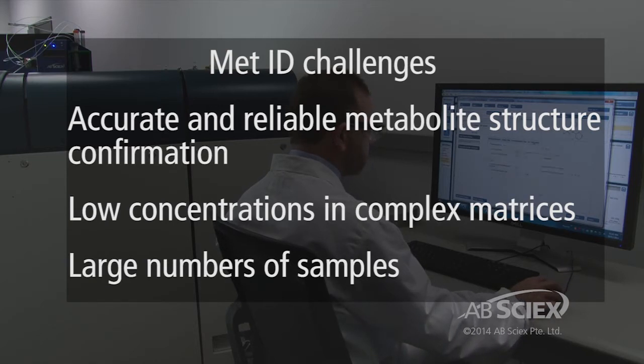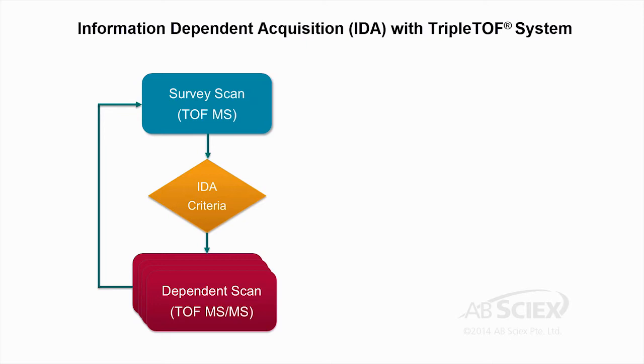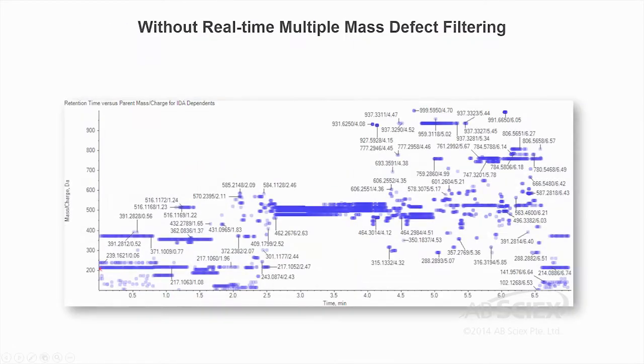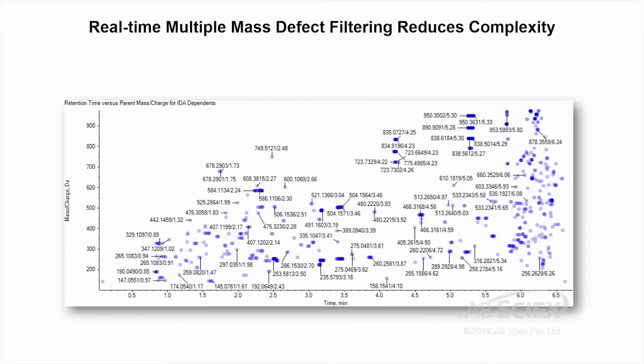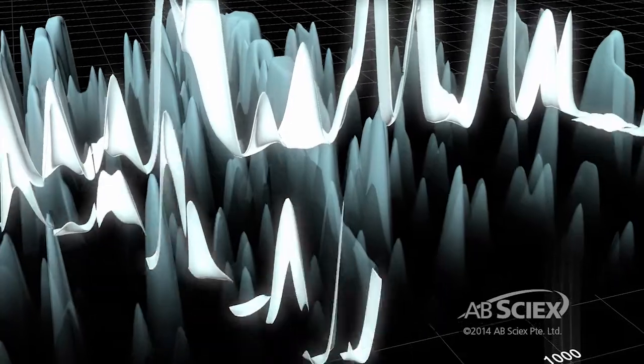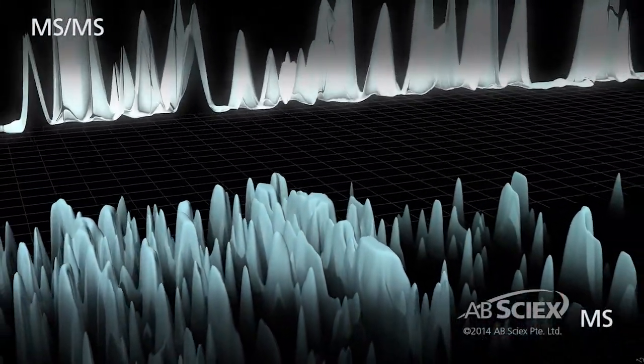Time of flight analysis provides the necessary level of mass accuracy for definitive molecular formula assignment. Structural confirmation is facilitated with the triple TOF using high resolution product ion spectra acquired either through information dependent acquisition or through SWATH acquisition. Information dependent acquisition with the triple TOF can employ real-time filters such as multiple mass defect and isotope pattern. This unique functionality can dramatically improve your ability to identify low-level metabolites in complex matrices. Alternatively, SWATH acquisition fragments all compounds creating a complete spectral archive of the sample.